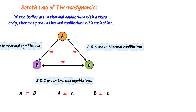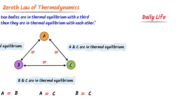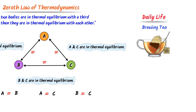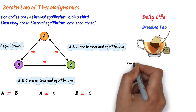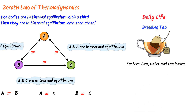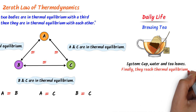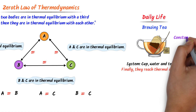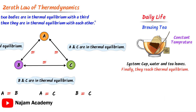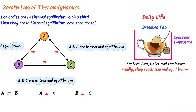For example, a daily life application of the zeroth law of thermodynamics is brewing tea. When you add hot water to tea leaves in a cup, the system consisting of the cup, water, and tea leaves eventually reaches thermal equilibrium. This equilibrium ensures that the temperature throughout the system is uniform — meaning the temperature of the cup, tea leaves, and water all remain constant. So we say that they are all in thermal equilibrium.